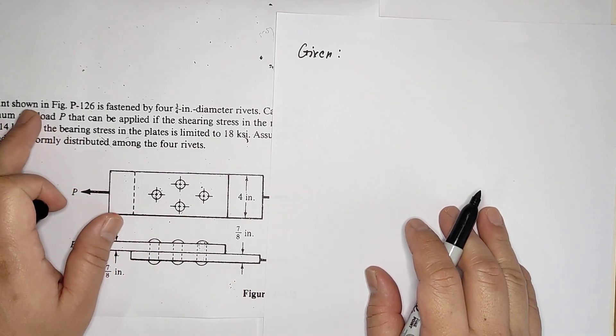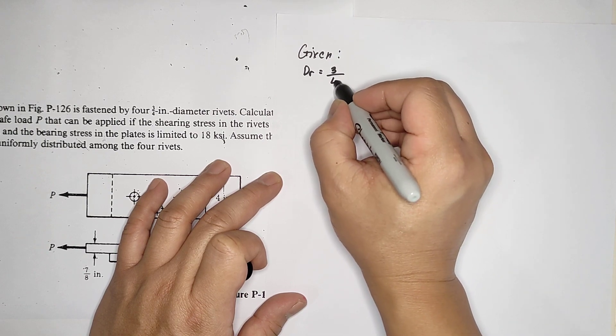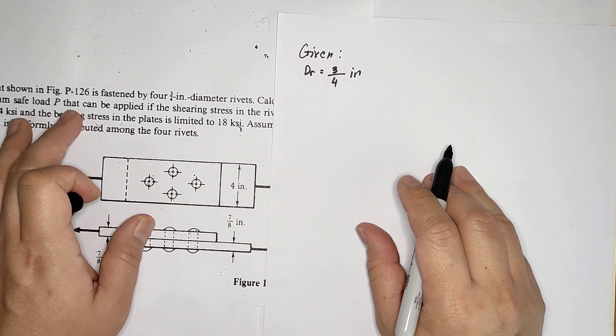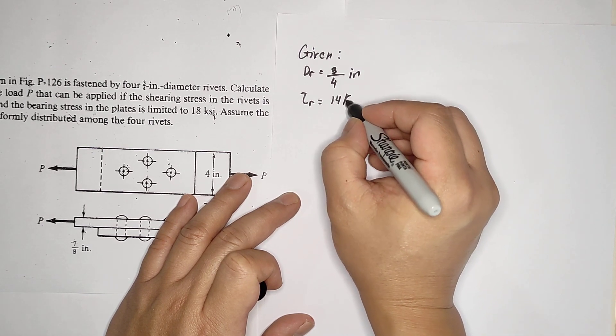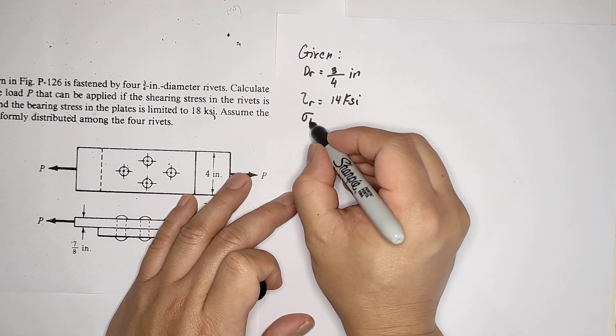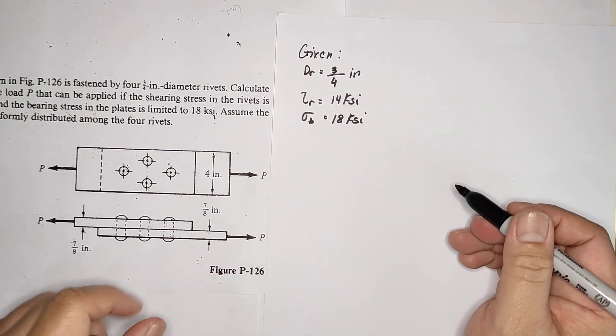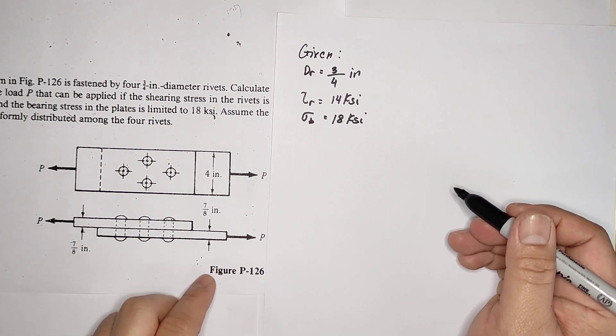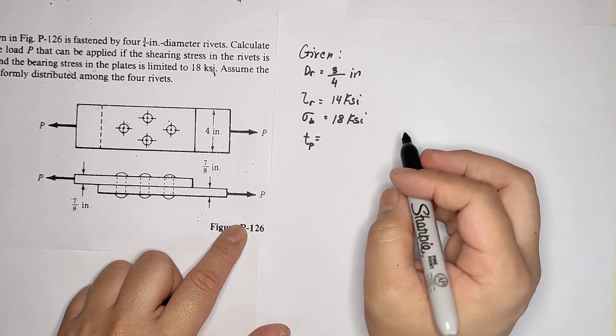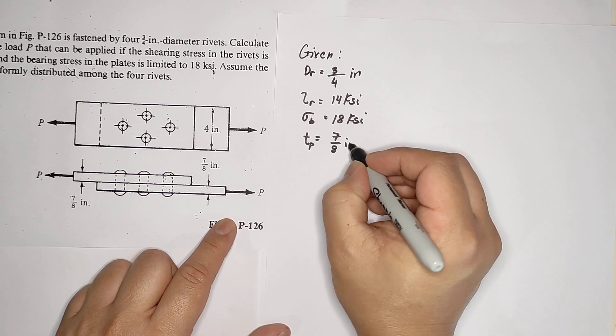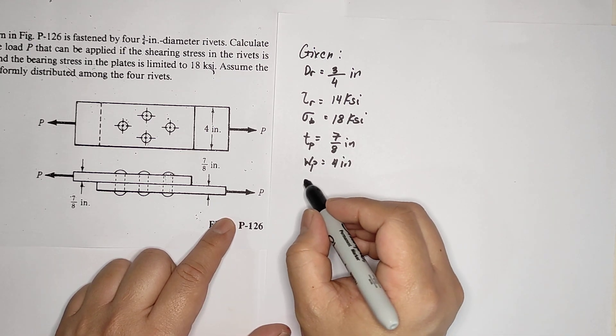Let's start solving by writing the given. You have a lap joint with diameter of the rivets dr = 3/4 inch. The shearing stress in the rivet is 14 KSI, and the bearing stress of the plate is limited to 18 KSI. The dimensions of the plate: thickness tp = 7/8 inch, and width of the plate is 4 inches.